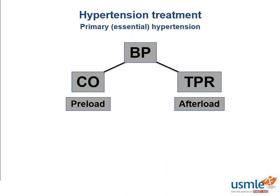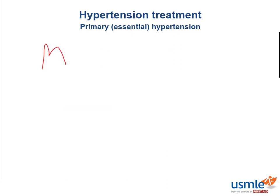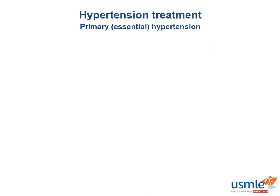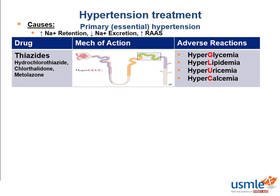Essential hypertension is best thought of as a process of unnecessary sodium retention. This can be due to inappropriate neurohormonal or renal responses, particularly overactivation of the RAS system. So you should always think about this equation when treating primary hypertension. To treat it specifically, we can give diuretics such as hydrochlorothiazide to block sodium reabsorption at the renal tubules and decrease water retention.